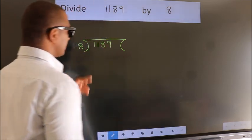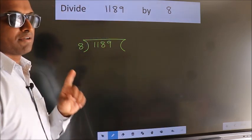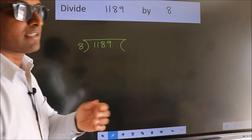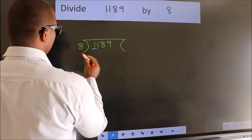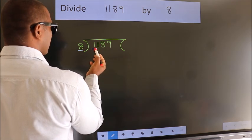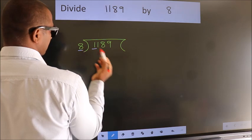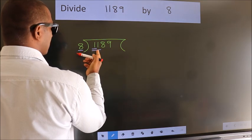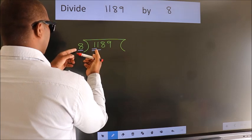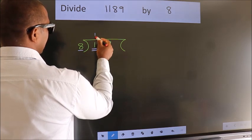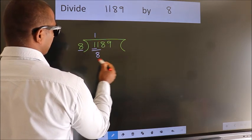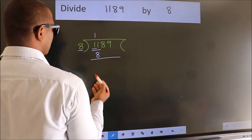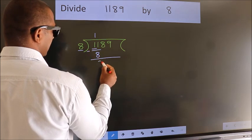This is your step 1. Next, here we have 1, here 8. 1 is smaller than 8, so we should take two numbers, 11. A number close to 11 in the 8 table is 8 once 8. Now, we should subtract. We get 3.